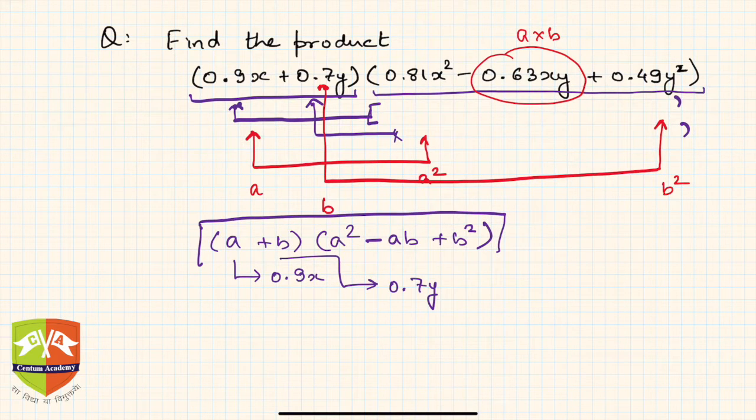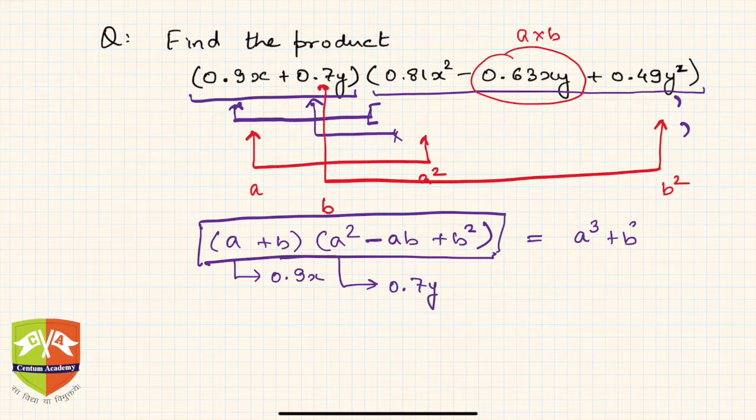What can we say about this then? It is nothing but if a plus b, a square minus ab plus b square is given, from the knowledge of algebraic identities it is nothing but a cubed plus b cubed. So hence let's use that. What is a here? a is clearly 0.9x.